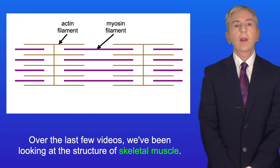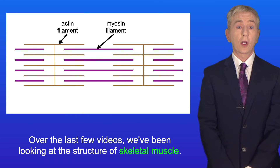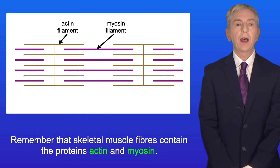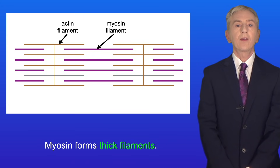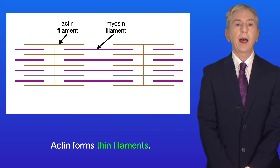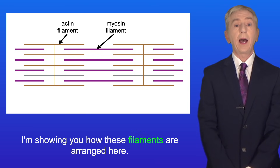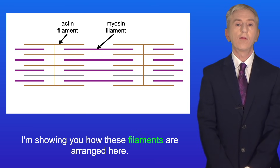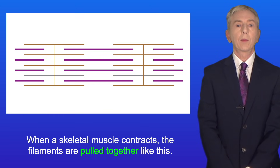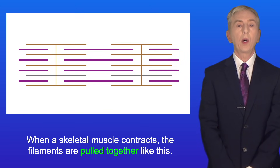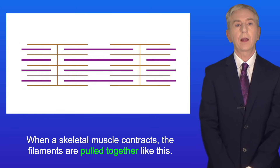Over the last few videos, we've been looking at the structure of skeletal muscle. Remember that skeletal muscle fibers contain the proteins actin and myosin. Myosin forms thick filaments and actin forms thin filaments, and I'm showing you how these filaments are arranged here. When a skeletal muscle contracts, the filaments are pulled together like this.